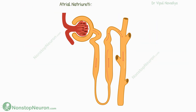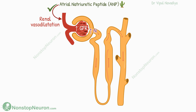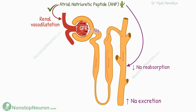The next factor is atrial natriuretic peptide. In contrast to the previous three factors, this one increases sodium excretion. It does so mainly by hemodynamic effect — it causes renal vasodilatation, which increases GFR and thereby increases sodium in the tubule. It also inhibits sodium reabsorption from the late portion of the collecting duct by some unknown mechanism. The net result is increased sodium excretion.